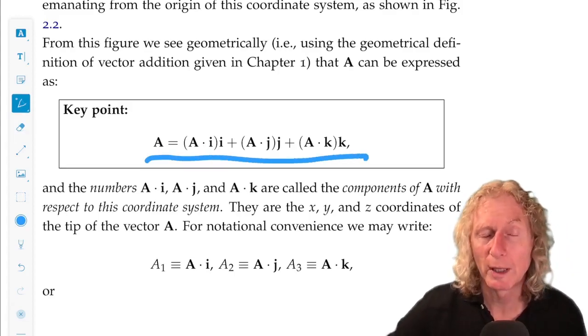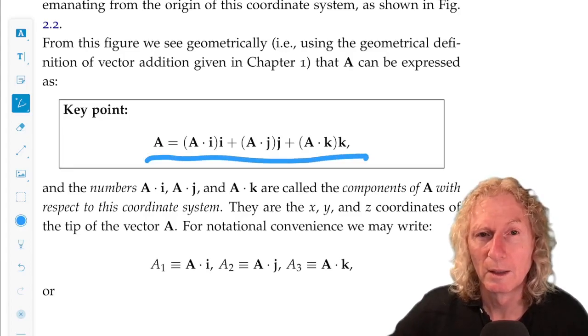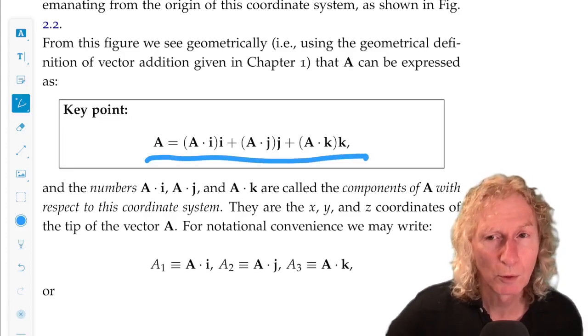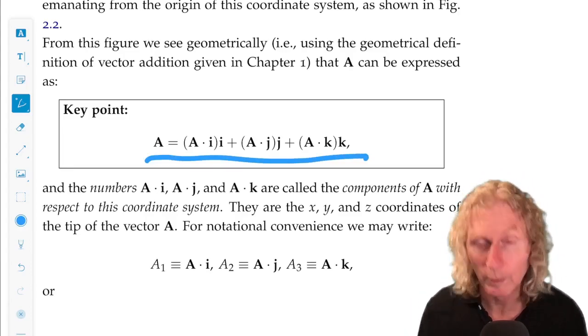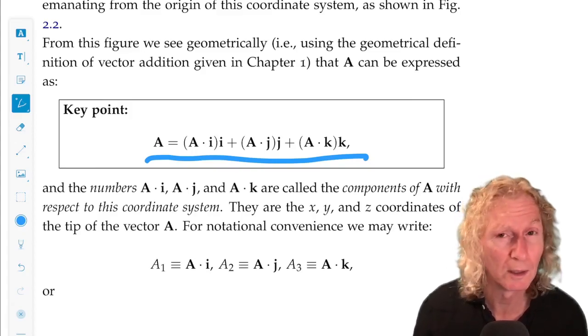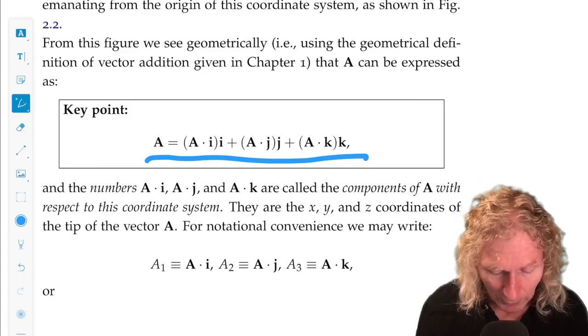The representation in the coordinate system is given as follows. We look at the projection of a along each of the coordinate directions, i, j, k, and we had the definition of projection in the last chapter.